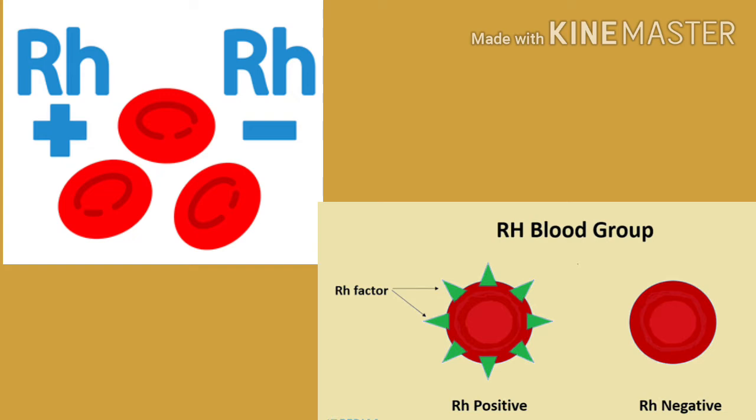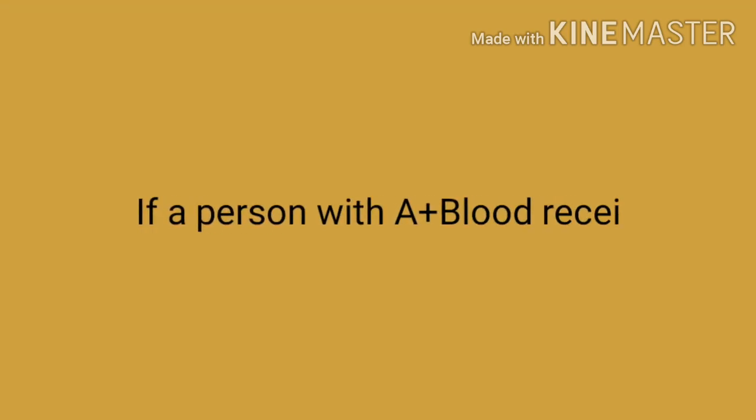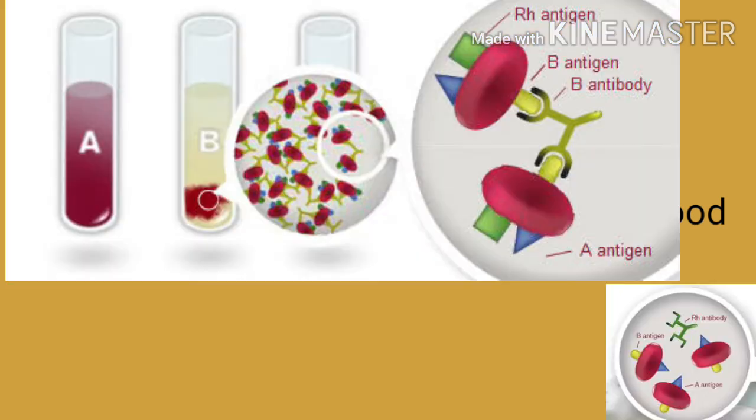If your blood has the Rh protein, you are Rh positive; if your blood lacks the protein, you are Rh negative. If a person with A positive blood receives B positive blood, the B antibodies in the A positive blood attack the foreign red blood cells by binding to them. The B antibodies bind the antigens in the B positive blood and agglutination occurs, which is dangerous because the agglutinated red blood cells break and their contents leak out and become toxic.